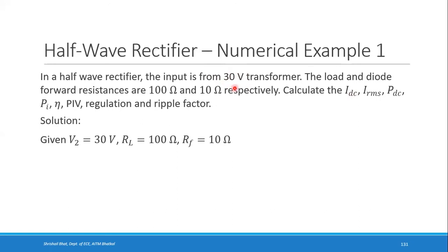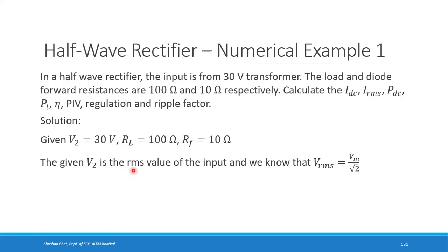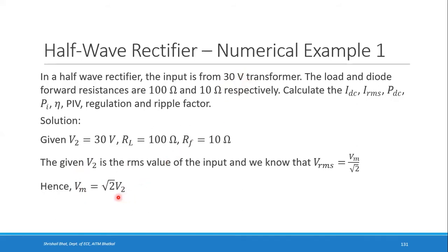The secondary voltage of 30 volts is the RMS value of the input. Do not confuse this with VRMS of the output. For the AC input, VRMS = Vm / √2, so Vm = √2 × VRMS. Here V2 is the RMS notation, so Vm = √2 × V2. If any voltage is given as a plain value, it is the RMS value and you multiply by √2 to get the peak.